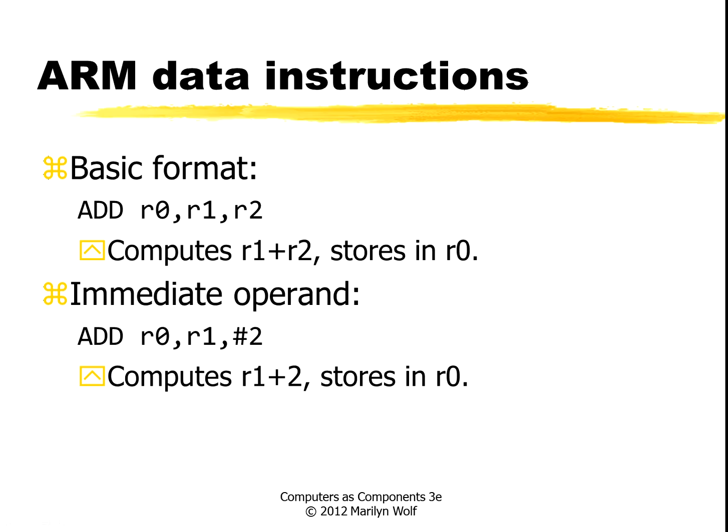Data instructions include things like addition. The basic format is an ADD opcode: the values of registers R1 and R2 are added together and the result is put in register R0. We can also use immediate operands — small constants directly encoded in the instruction. For example, take the value in R1, add 2 to it, and store the result in R0.